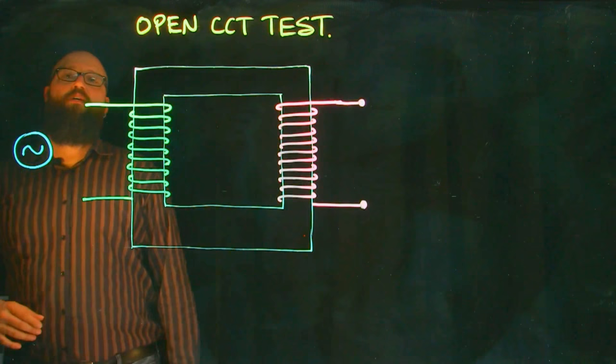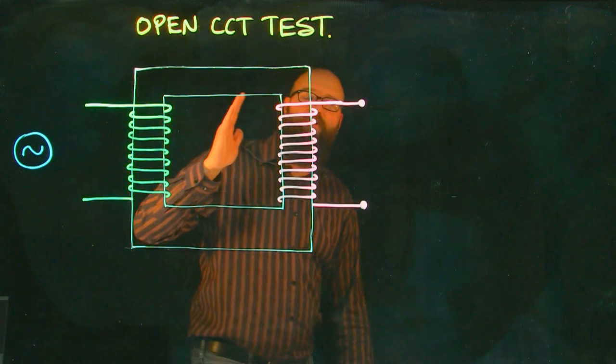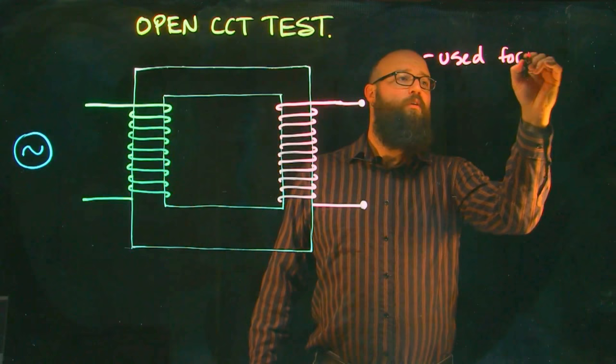Now what we want to do is connect the primary side of our transformer to a voltage supply. In this case, we're going to use our rated voltage, but before we do that, we want to put a wattmeter into our circuit because primarily what we want to read with an open circuit test is core losses.